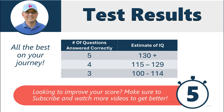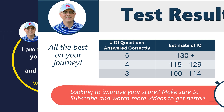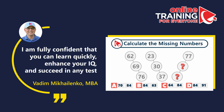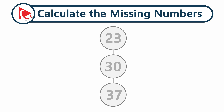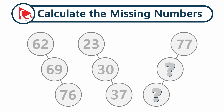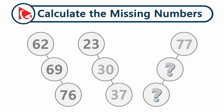With this question, we will look at an amazingly simple and elegant combination of shapes and numbers to test your math skills. You are presented with three shapes, each of which has three circles on one line. The first shape has numbers 62, 69, and 76. The second shape has numbers 23, 30, and 37. The third shape only has one number, 77, and two numbers are missing. You need to calculate and select the two missing numbers out of four possible choices.